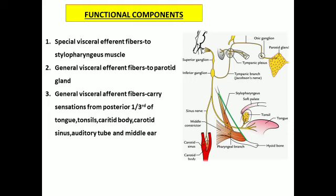The next functional component is general visceral afferent fibers. These fibers carry sensations from various sites like the posterior one-third of the tongue including the circumvallate papillae, and also from the palatine tonsils. Additionally, sensations are carried from the carotid body and carotid sinus — these are the baro- and chemoreceptors. Sensations are also carried from the auditory tube or Eustachian tube and from the middle ear cavity through the glossopharyngeal nerve fibers.